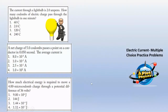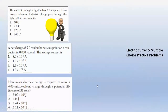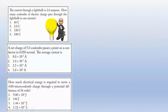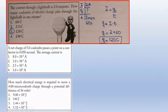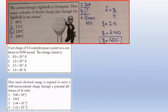Now let's solve some electric current multiple choice practice problems from aplusphysics.com. Problem: The current through a light bulb is 2 amps. How many Coulombs of electric charge pass through the light bulb in 1 minute? Data: current I = 2 A, time = 1 minute = 60 seconds, find charge Q. Using I = Q/T, rearrange to Q = I × T. Substituting: Q = 2 × 60 = 120 Coulombs.